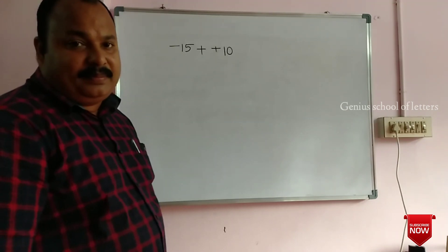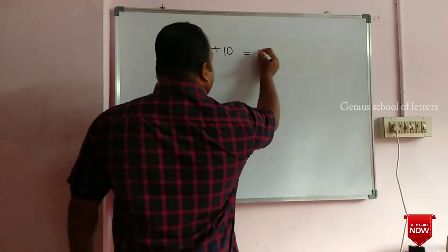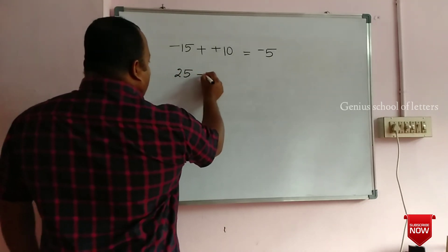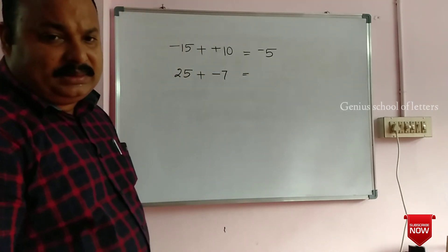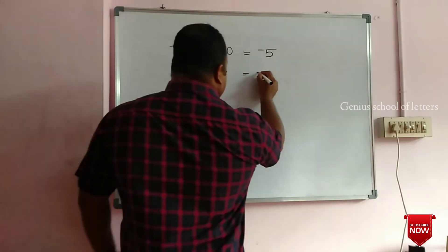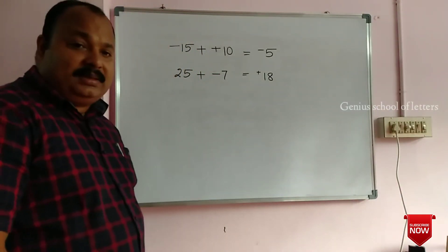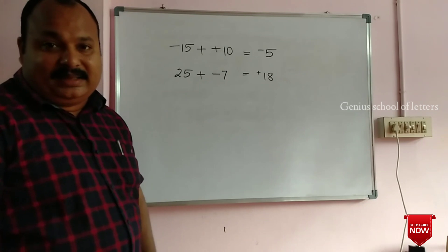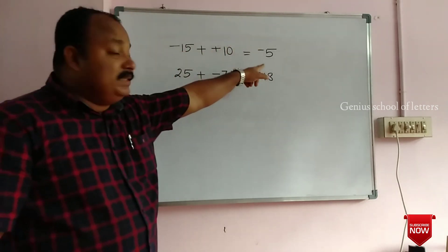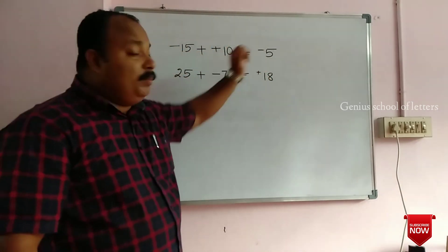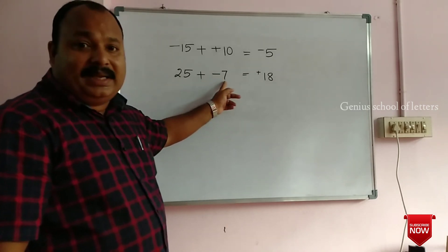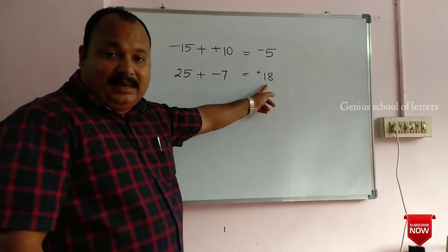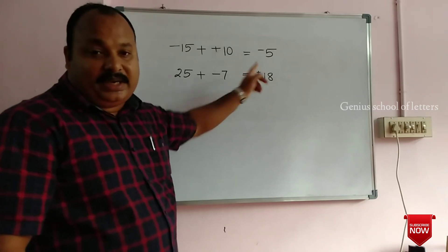Is the neutral area? Is the neutral negative anchor? 25 plus negative 7 — is the neutral area? Is the neutral plus 18? One positive and negative one is the neutral one. That is the neutral one. 25 plus negative 7 is the neutral one. Answer 18 is the neutral one.